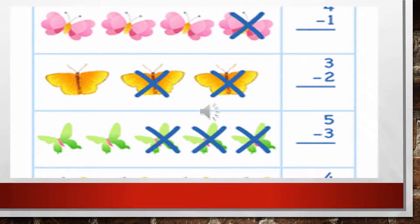With the help of these picture examples, we will first understand subtraction, then learn subtracting 0 or subtracting the same number from itself. In the first row, we are having 4 butterflies and we have crossed 1. It means we have subtracted 1 out of 4. If we count the remaining, it will be 1, 2, and 3 — so the answer will be 3. In the second row, there are 3 butterflies and we have crossed 2. The sum will be 3 minus 2 and the remaining butterfly is 1. So 3 is the minuend, 2 is the subtrahend, and the remaining 1 butterfly is the answer.